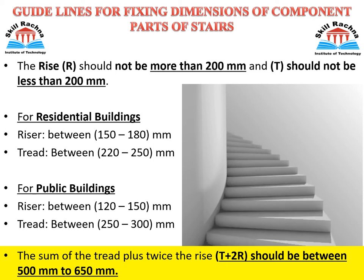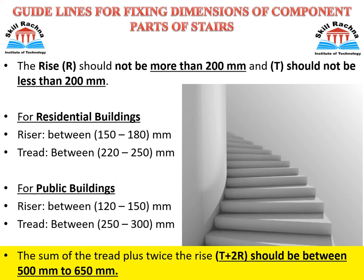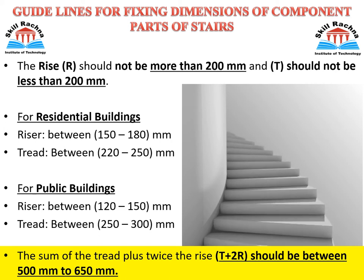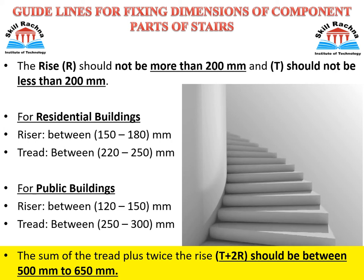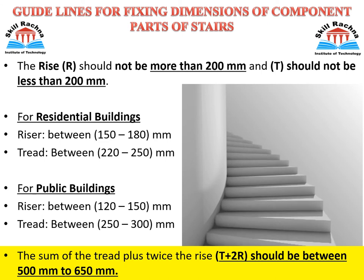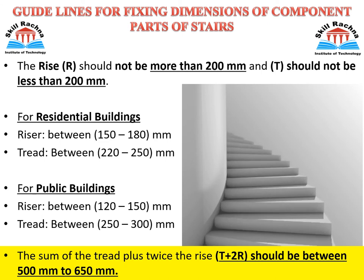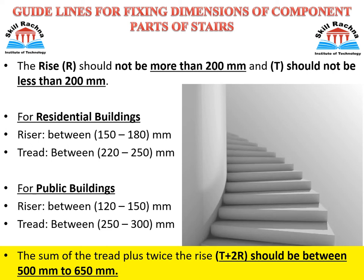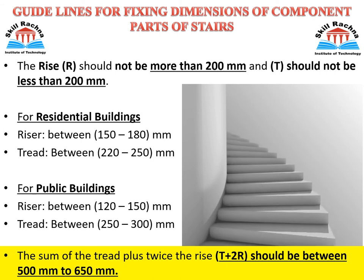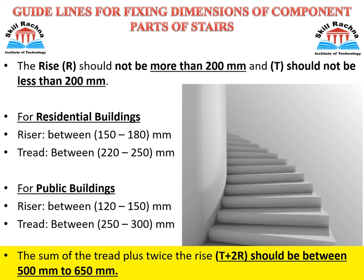Buildings can be classified into two types: residential and public. As per IS codes, the riser for a residential building should be between 150 to 180 mm and the tread 220 to 250 mm. For public buildings, the riser can be 120 to 150 mm and the tread 250 to 300 mm. When selecting dimensions, you must verify with the thumb rule: T + 2R (one tread plus two risers) should not be more than 650 mm and not less than 500 mm, ideally around 600 mm.